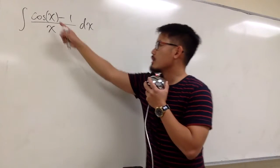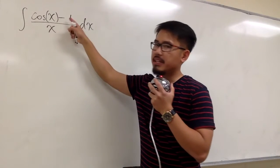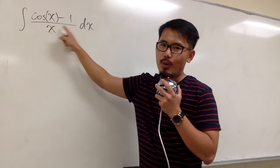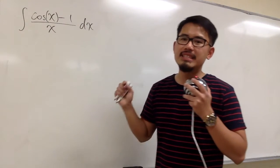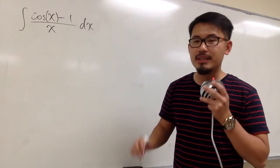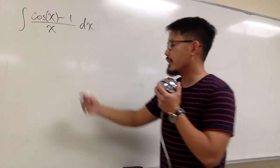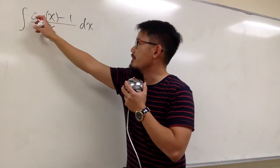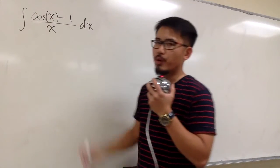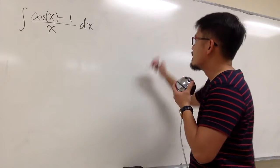We are going to integrate cosine of x minus 1, over x, as an infinite series. To do so, let's first take a look at the infinite series for cosine x.